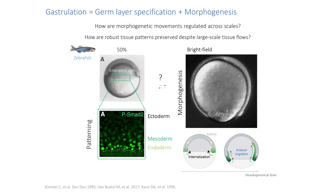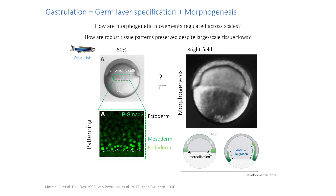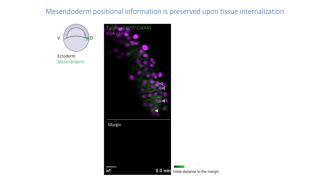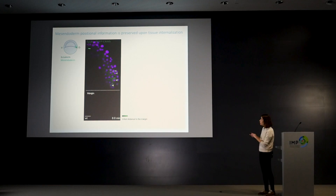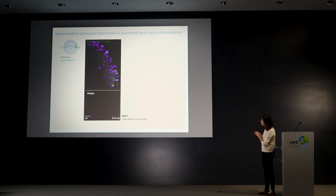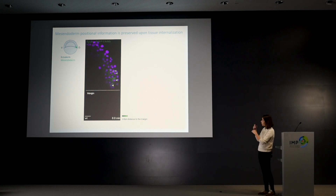To tackle this question, the first thing we did was to image the process of internalization. Here you can see a mesendodermal marker in green and a nuclear marker in magenta — this is a cross-section through the embryo. You can see the cells and in the dashed line the marginal region, which is the interface between the embryonic part and the yolk cell.